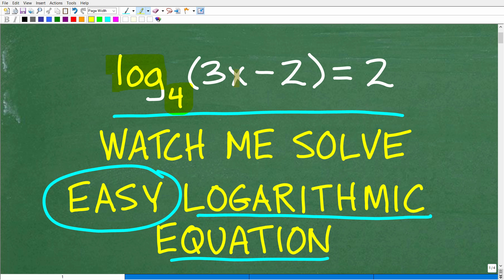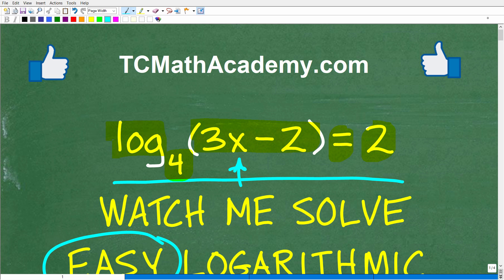We have log base 4 of 3x minus 2 equals 2, and the objective here is to solve for x. You don't even need to use a calculator, but feel free to use one if that's going to help you out. If you could solve for x, go ahead and put your answer into the comment section. I'll show you the correct answer in just one second, then I'm going to fully explain exactly how to solve a problem like this.